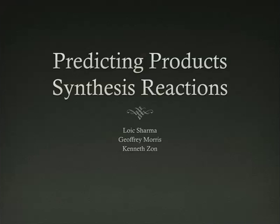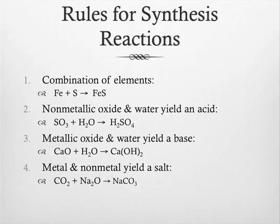Predicting products for synthesis reactions. The rules or types of synthesis reactions. The first is the most broad combination of elements. A simple A plus B goes to form AB. The example we have is iron plus sulfur goes to form iron sulfide.